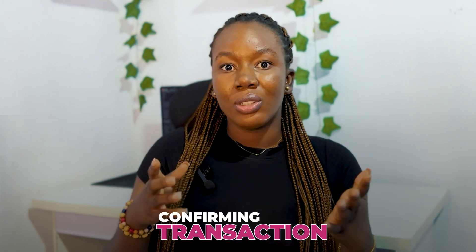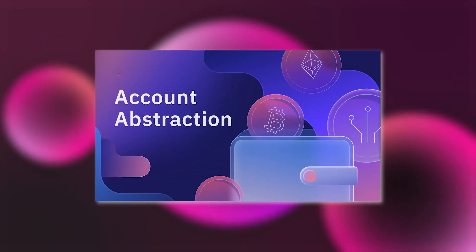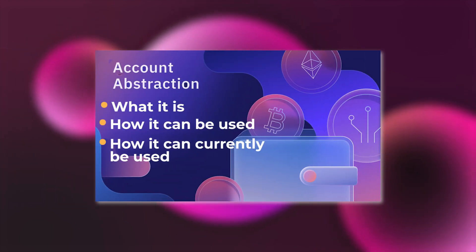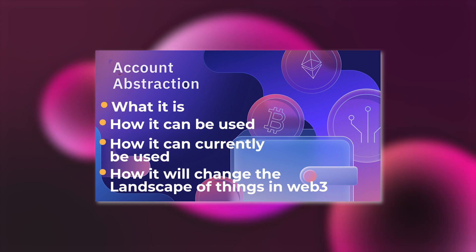So instead of managing every single detail — whether it is managing your private keys, confirming transactions, and lots more — account abstraction takes over, automating the process so you can focus on what actually matters. Today we are going to be looking at account abstraction: what it is, how it can be used, how it is currently being used, and of course how it is going to change the landscape of things in Web3.